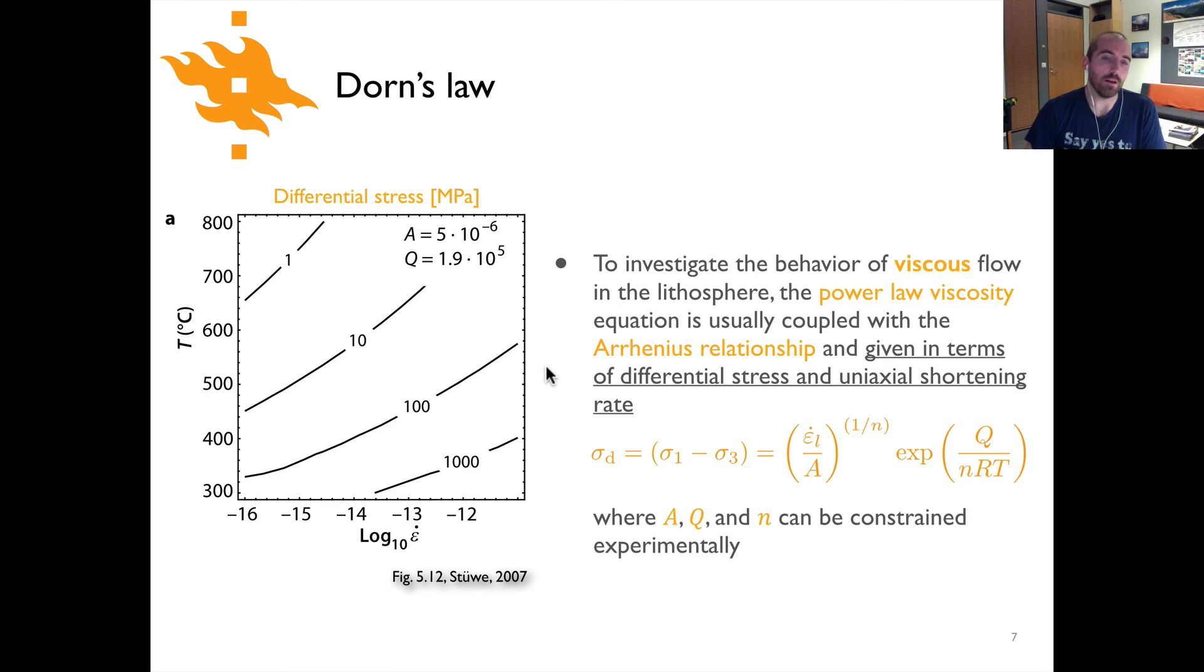Now, the plot over here on the left basically shows how this Dorn's law works. You can see here we have temperatures increasing on the vertical axis. And then this is the log of the strain rate. And so strain rates of 10⁻¹⁶ to 10⁻¹² are plotted here, and those would be in typically something like per second. So how does it work? Well, you can think about it this way. First off, let's consider a case of constant temperature, maybe 400 degrees. And then we'll talk about what these contour lines mean here.